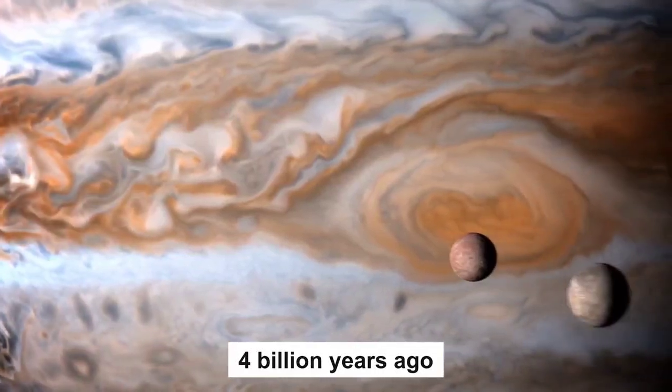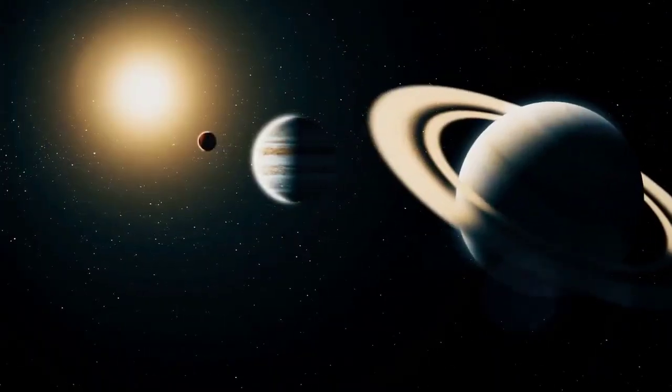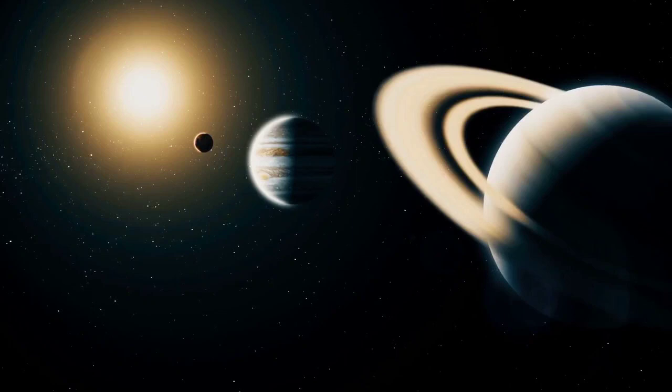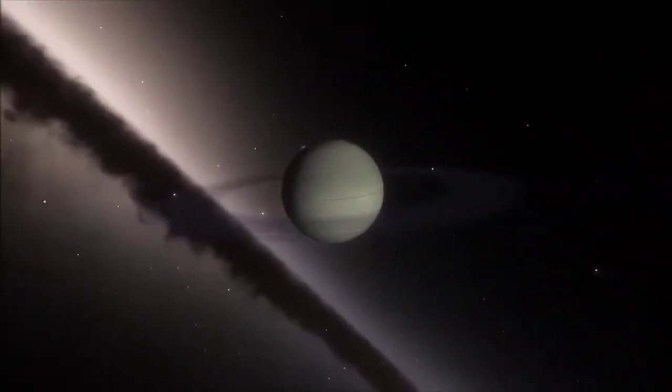Over 4 billion years ago, it was recorded that Jupiter flung an infant planet out of our solar system into space, making it a rogue planet.